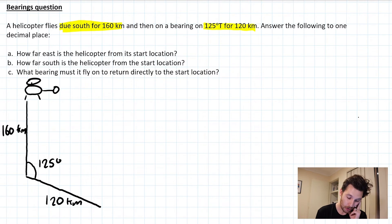Okay, so question or part one, part A: how far east is the helicopter from the start location? At first glance it looks like we don't have a lot of information to work with. What we do need to do is start drawing in some right angle triangles that will help us make a little bit more sense of what's going on. So I'm going to make a right angle triangle here like that. I'll perhaps draw this in green.